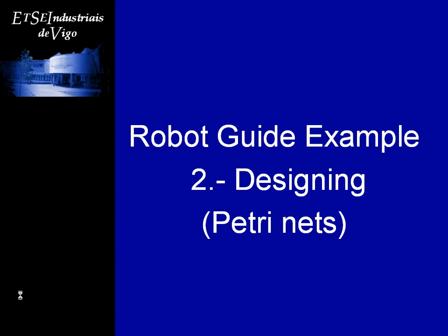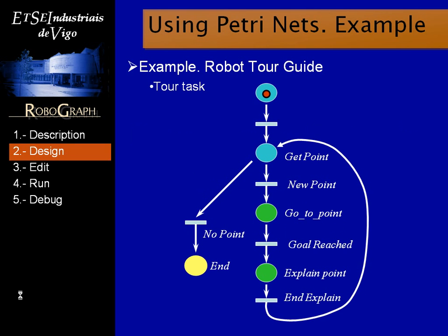Now we will define the Petri Nets needed to program this example. The main Petri Net will receive the list of points to visit. Each point in the list will contain the coordinates in the map and the audio file to reproduce. Places with blue background are primitive actions, while places in green will start another Petri Net that we will define later. The place with yellow background is defined as the final place.